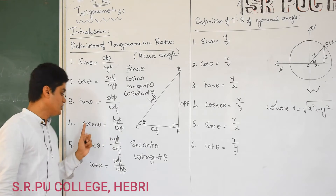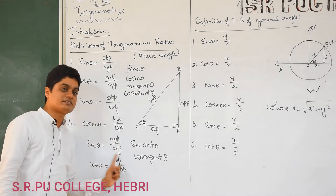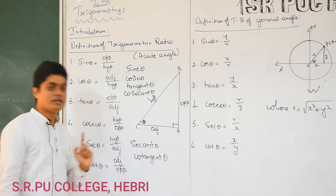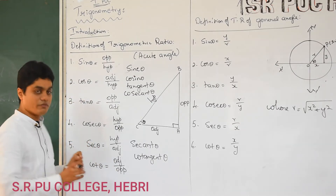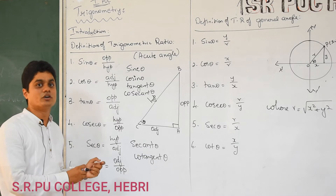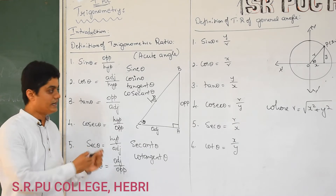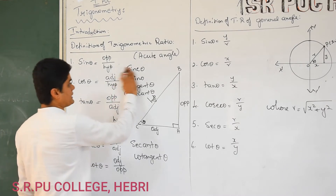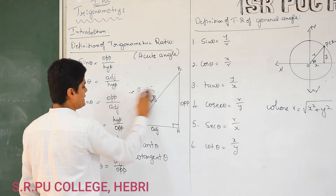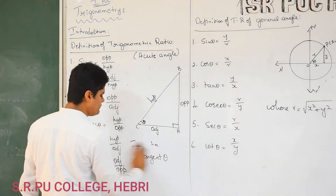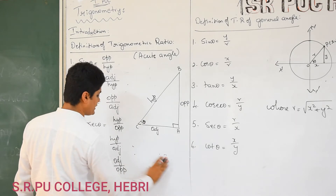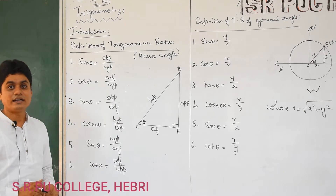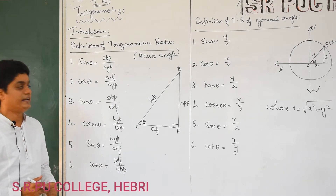Hypotenuse by opposite is called cosecant. Hypotenuse by adjacent is called secant. Cos theta — adjacent by opposite — that is cotangent. So these definitions are very, very important. You have already used them so many times in problems. Please remember: this definition holds only for acute angle — an angle which is less than 90 degrees.